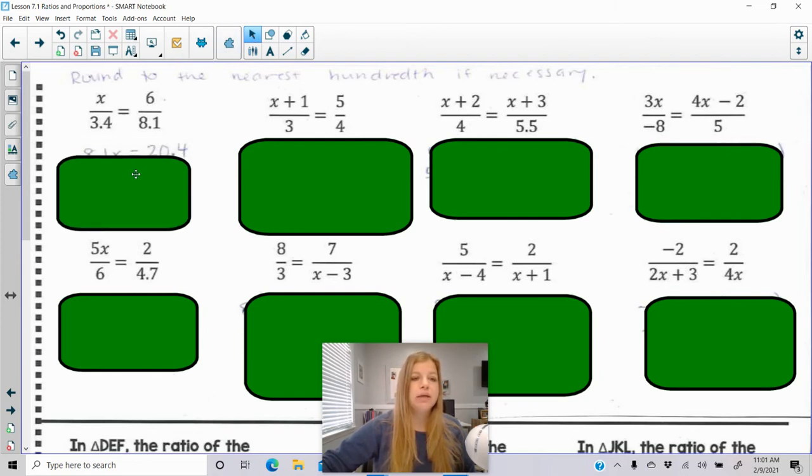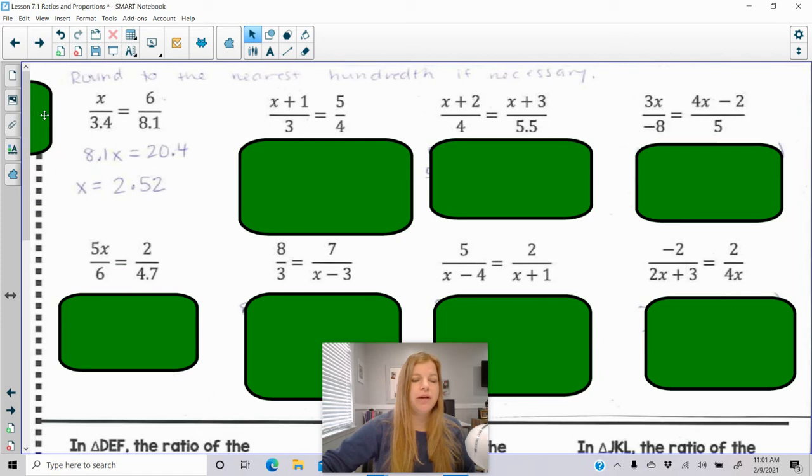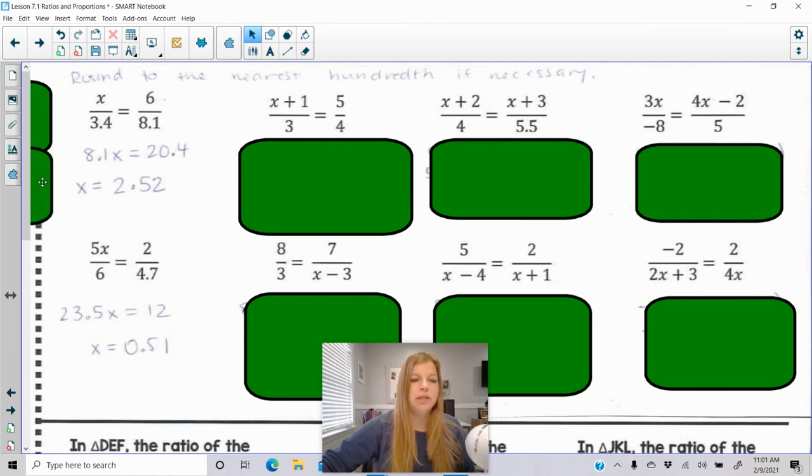If I use cross products here, it would be 8.1 times x equals 6 times 3.4, which is 20.4. Divide both sides by 8.1, and I get 2.52. Now with this one, let's do the problem below it. 5x over 6 equals 2 over 4.7. So 6 times 2 is 12, and 5x times 4.7 is 23.5. Divide both sides by 23.5, and I get 0.51.